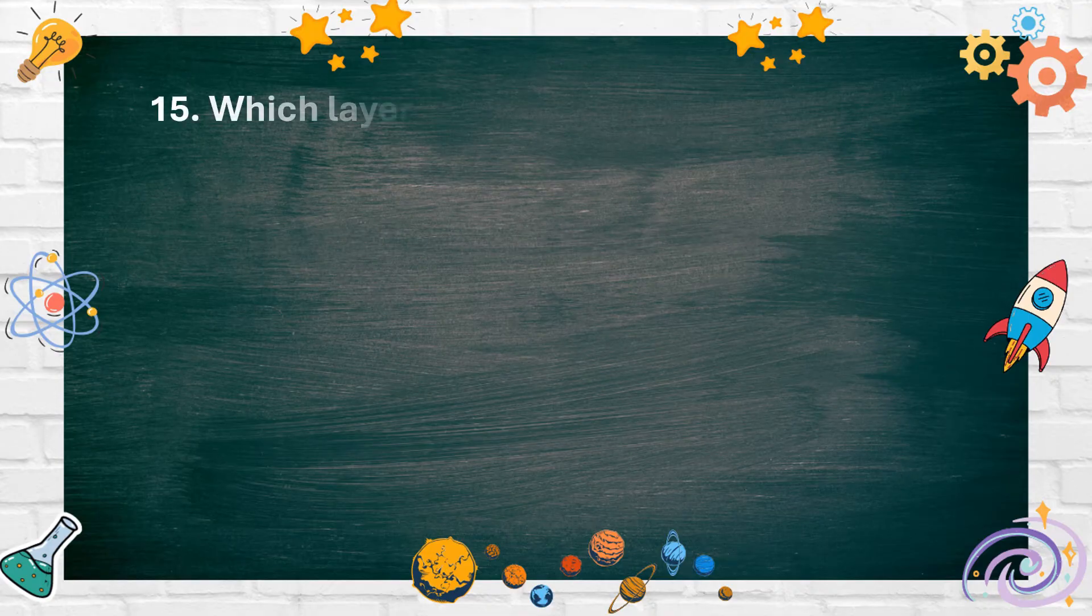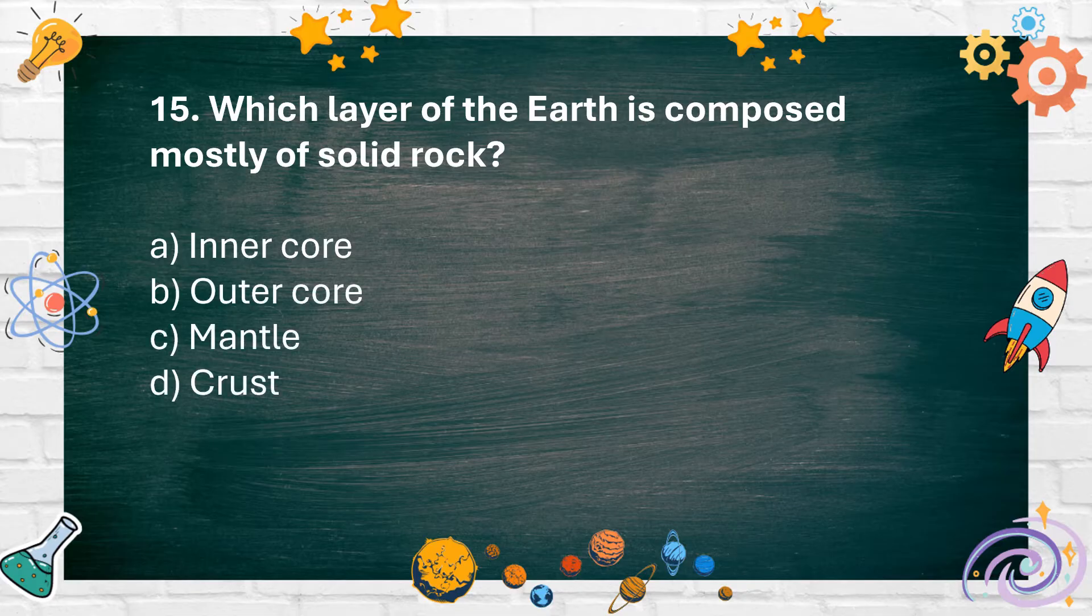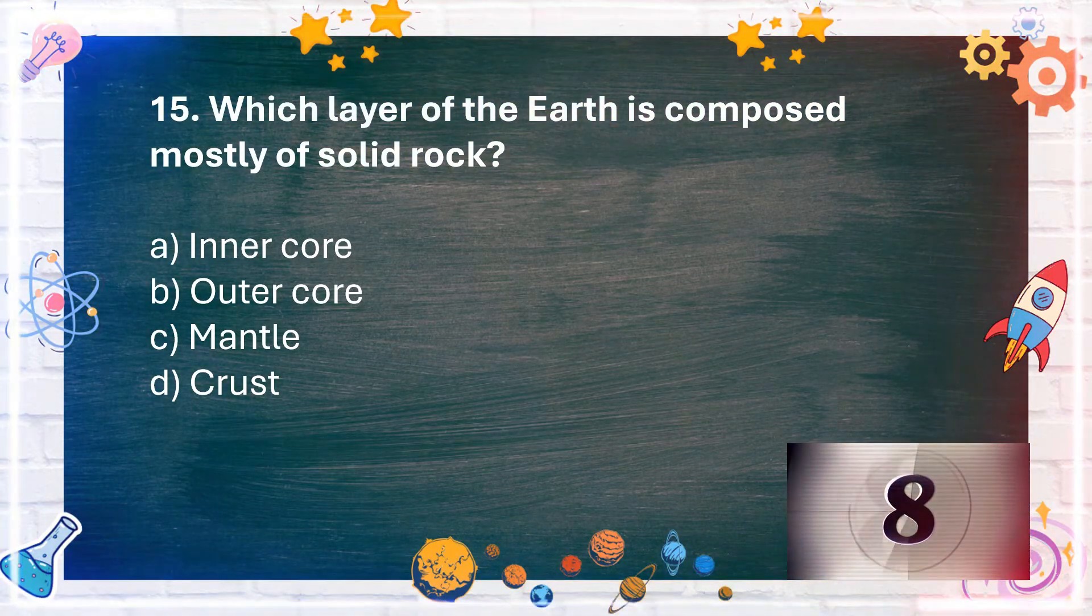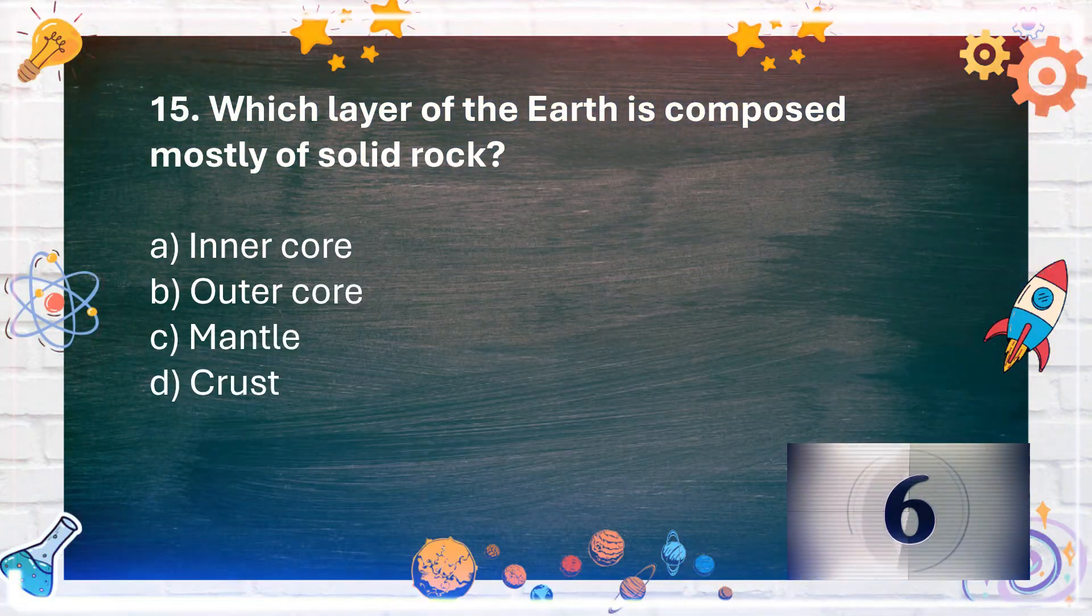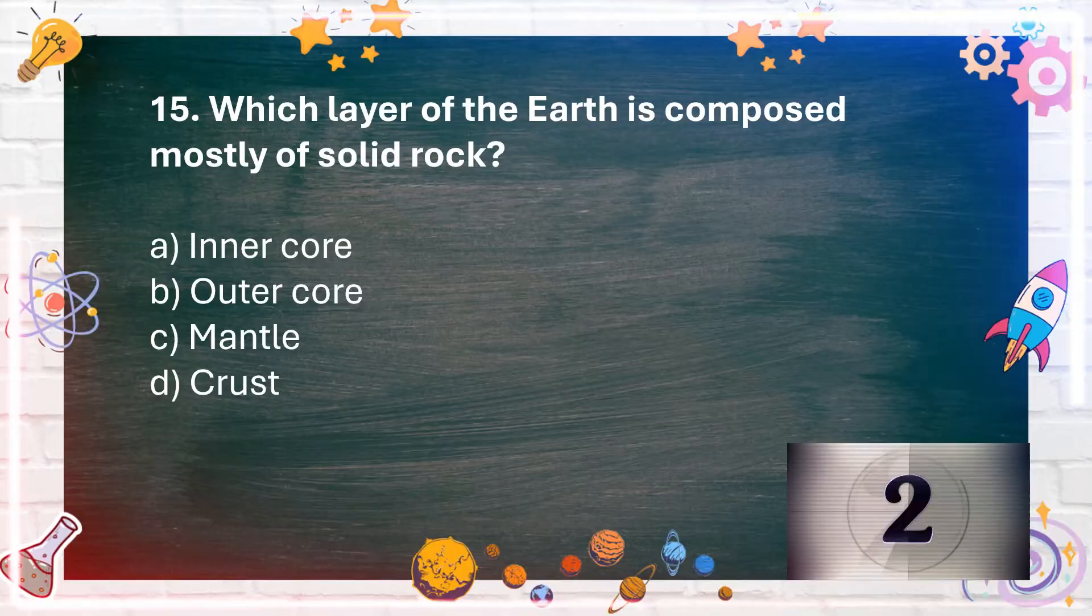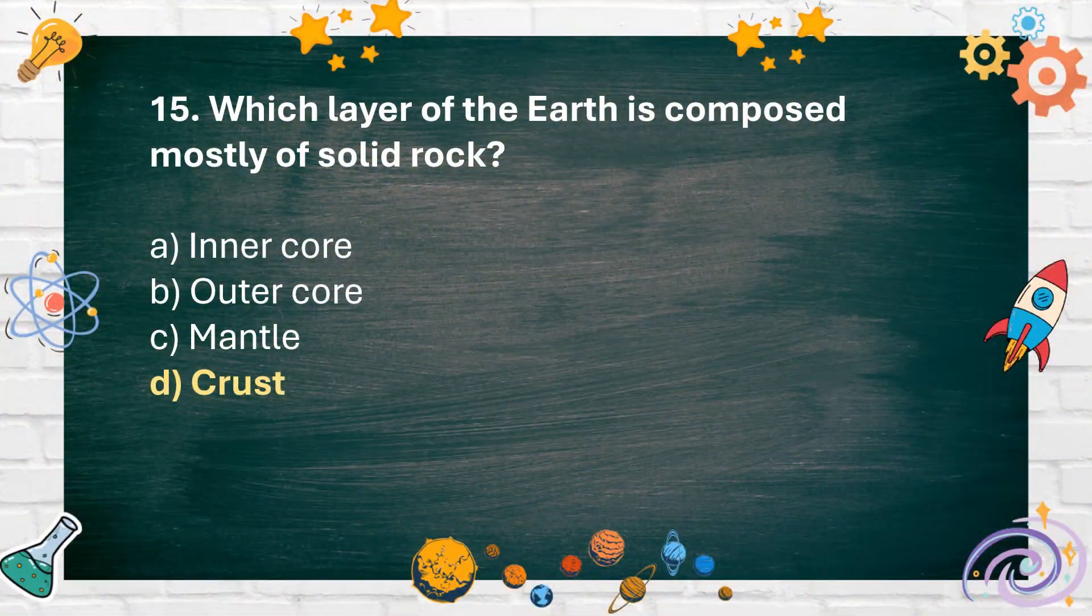Number 15: Which layer of the Earth is composed mostly of solid rock? A. Inner core, B. Outer core, C. Mantle, D. Crust. The answer is D. Crust.